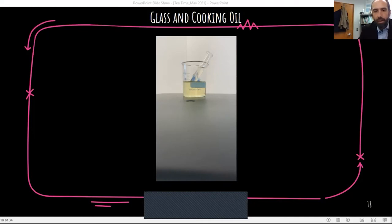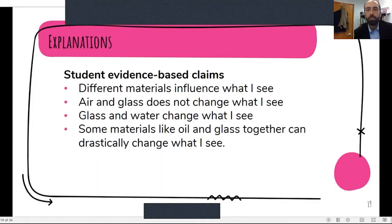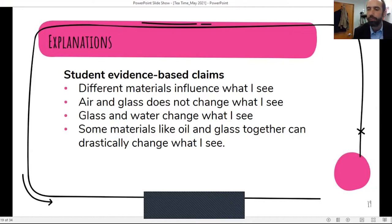So in terms of the explanation for this one, students can make a variety of different explanations or evidence-based claims, I should say, based on what they've noticed. At the grades K through two, and even three through five, I'm looking for fairly simple explanations. So they'll notice that different materials influence what they see. Air and glass does not change what they see. Glass and water, it changes what they see. And some materials like that oil and glass together, they drastically change what they see. So really what I'm trying to do is I'm trying to build that foundational understanding that light has different properties and it behaves in different ways when it is in contact with different mediums. And those different mediums are water, oil, and glass.